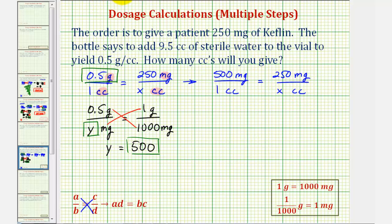Now notice how the units are the same on the top and the bottom - milligrams, milligrams, cc's, cc's. And now we can cross multiply and solve for x, which will tell us how many cc's we need.